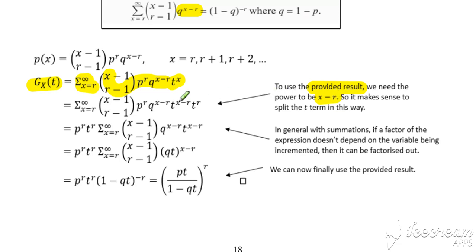We need this power to be x-r, so therefore we split the t^x into t^(x-r) and t^r so that we can enable incorporating that power.